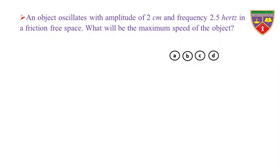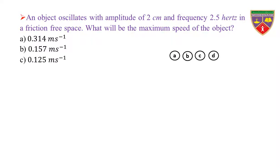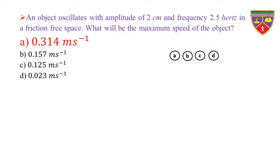An object oscillates with amplitude of 2 cm and frequency 2.5 Hz in a friction-free space. What will be the maximum speed of the object? Option A: 0.314 m/s. Option B: 0.157 m/s. Option C: 0.125 m/s. Option D: 0.023 m/s. The key is 0.314 m/s. Therefore, the correct option is A.